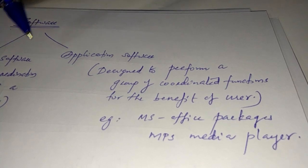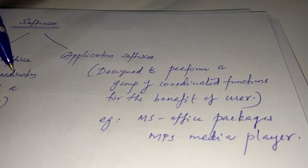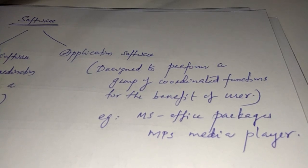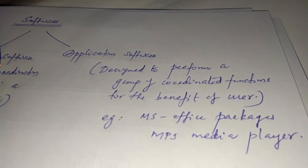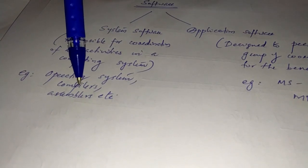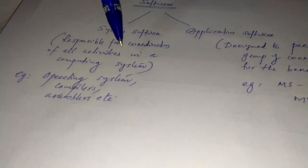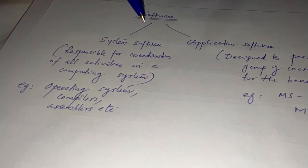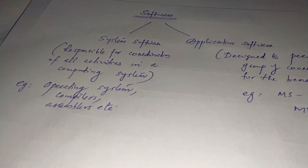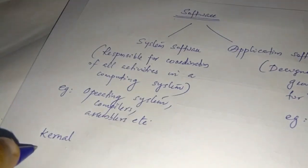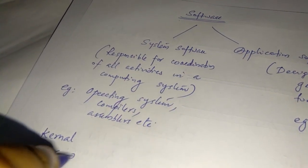The operating system is one of the important system software examples. The application program has to be converted into binary language — zeros and ones. The operating system runs in two modes: one is kernel mode and one is user mode.